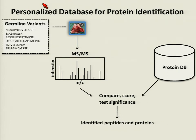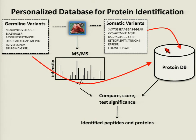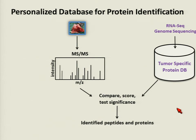In addition to germline variants that exist between patients, tumors also have somatic variants, fusion proteins, and many other genomic variations that are not represented in a reference protein database. Ideally, we would use a database containing all this genetic variation so we could identify these peptides and proteins. The ideal database would contain all potentially relevant peptides without too many irrelevant ones, since too many irrelevant proteins decrease sensitivity. So we decided to use RNA and genome sequencing data from each tumor to create a tumor-specific database for identifying tumor- and patient-specific peptides.